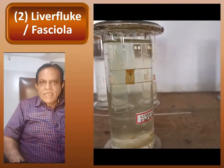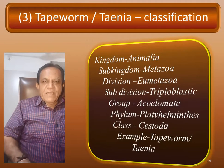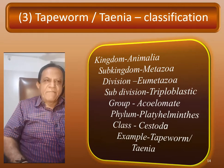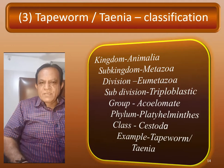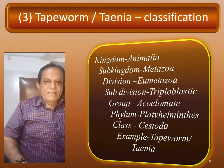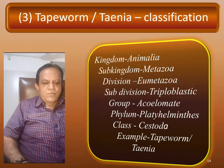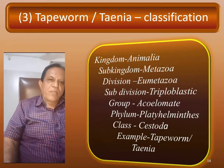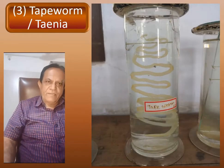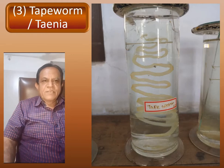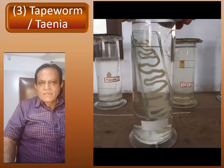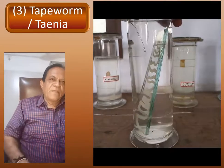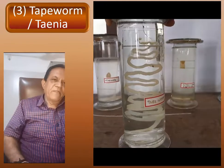Third, Tapeworm or Taenia solium. Up to Phylum Platyhelminthes level the classification will remain the same: Kingdom Animalia, Sub-Kingdom Metazoa, Division Eumetazoa, Sub-Division Triploblastic, Group Acoelomate, Phylum Platyhelminthes, Class Cestoda, and Example Tapeworm or Taenia solium. This is the Flatworm or Tapeworm, flattened dorso-ventrally. This is the Tapeworm — easily recognized and identified. Very good specimens.